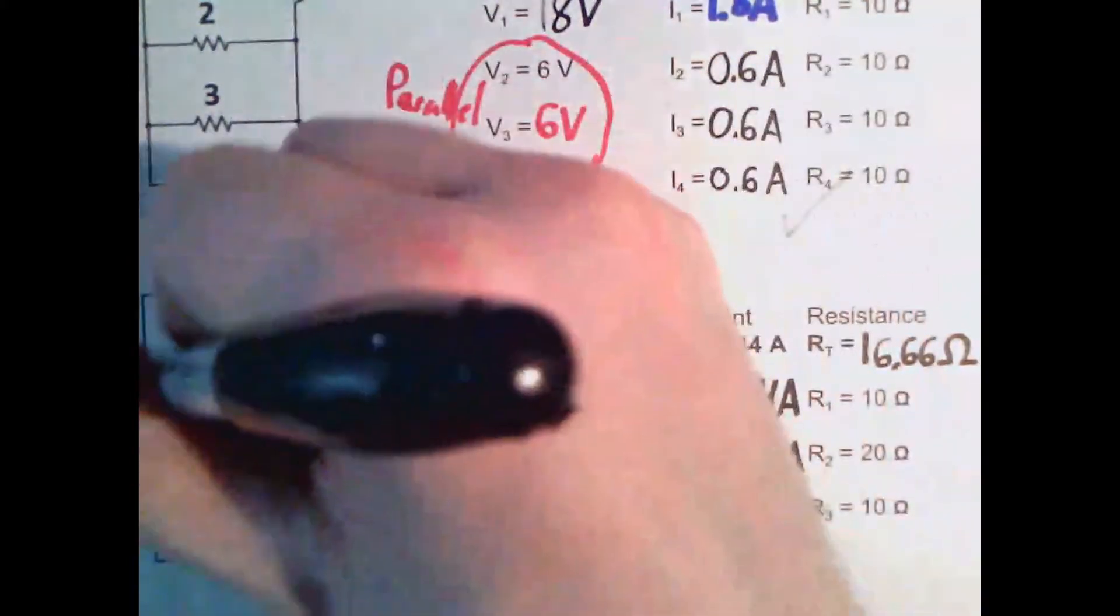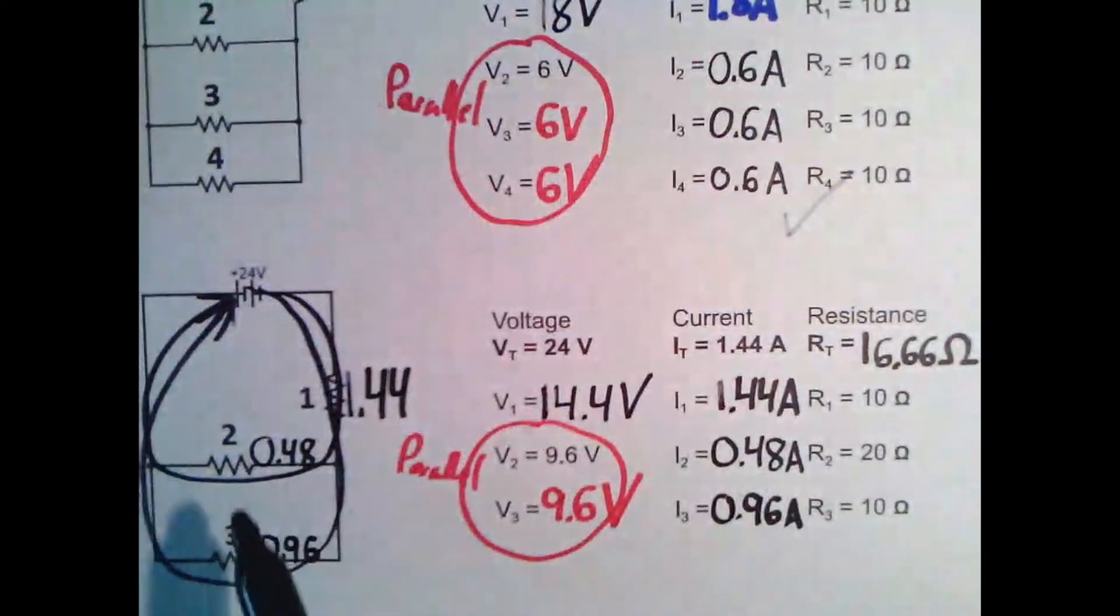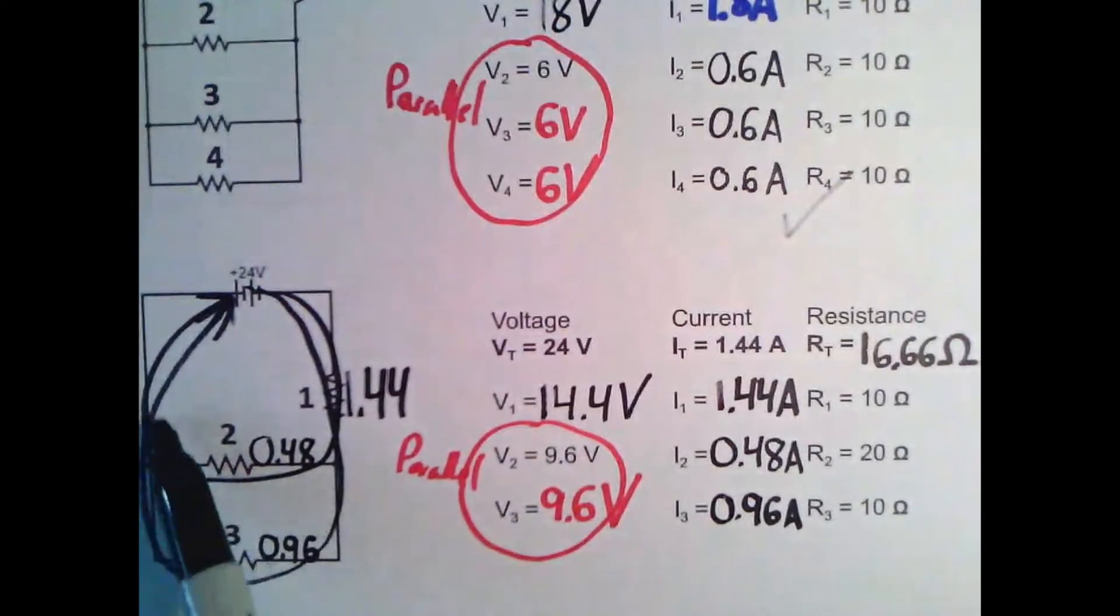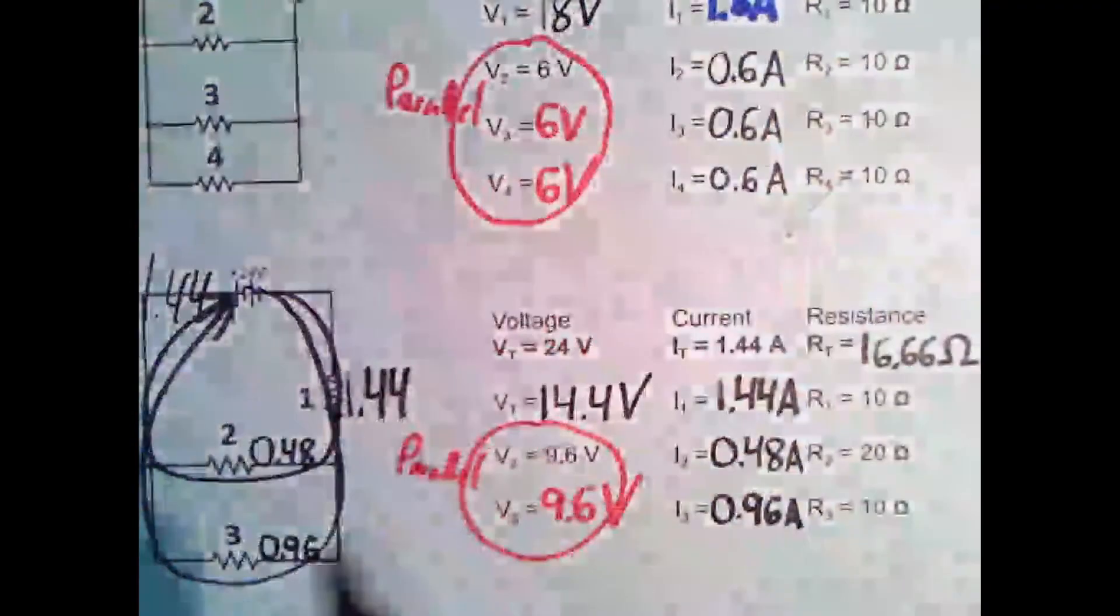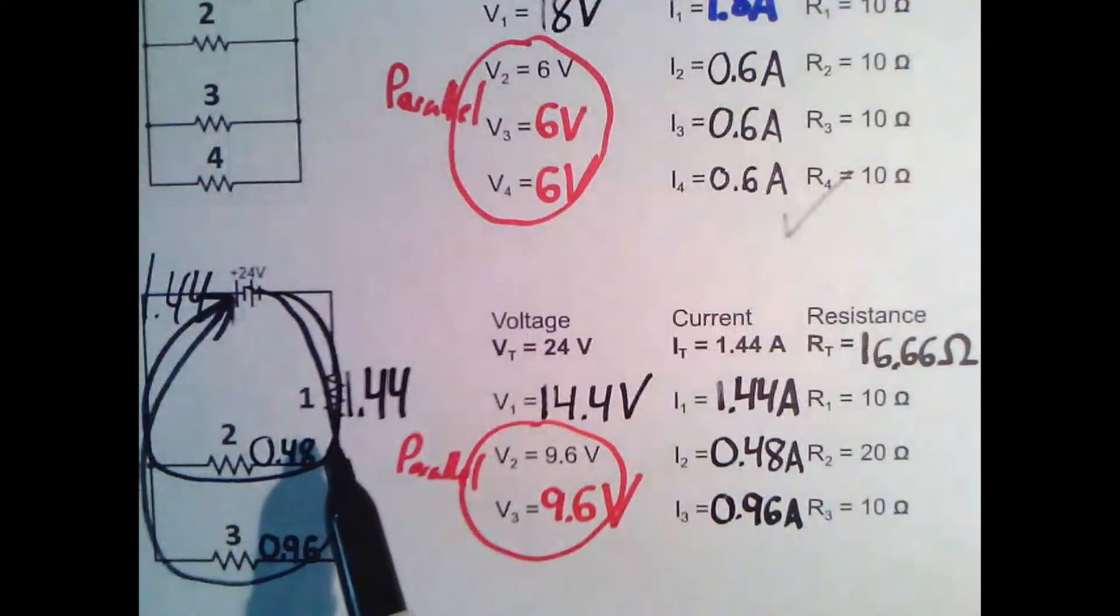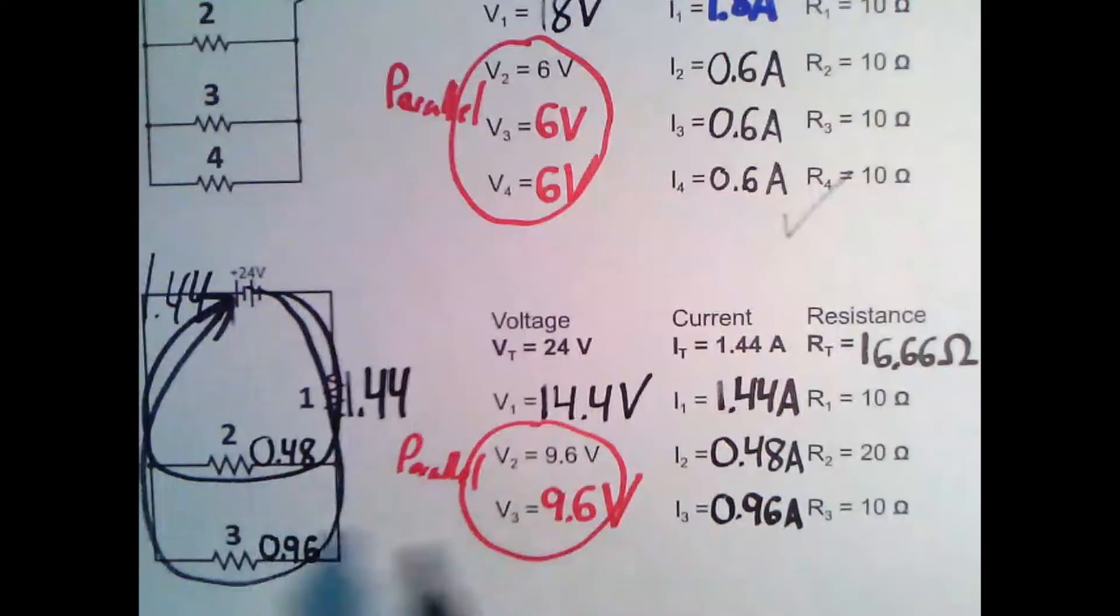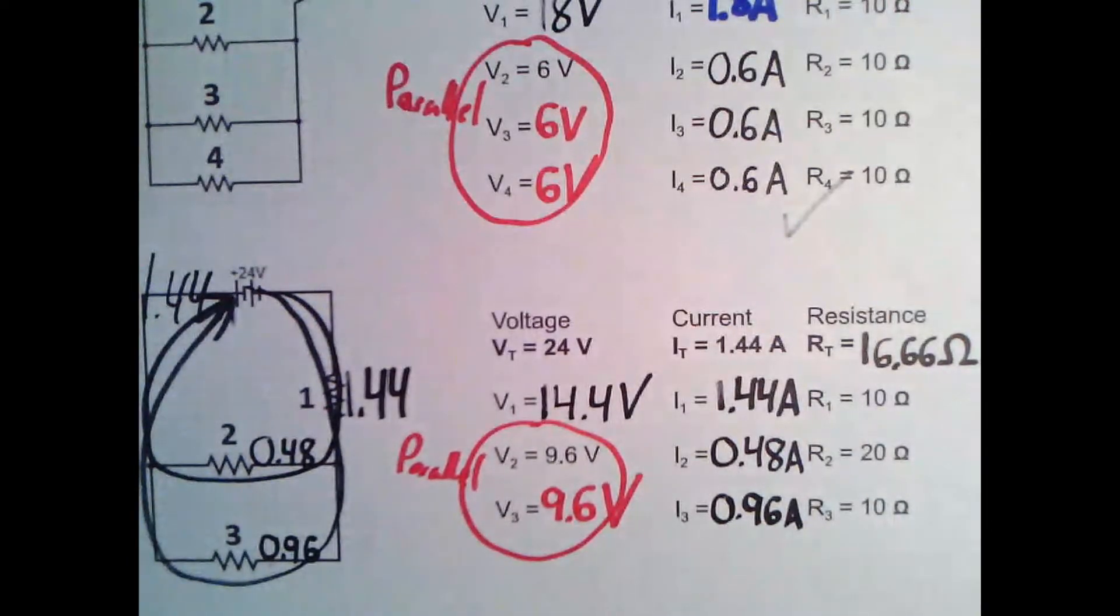And then as the electrons travel through, these paths connect up again here. So this is 1.44 as well. So this is 1.44 amps, 1.44 amps. It splits into two because of the resistances. It does not get split evenly because there's a different resistance here and here.